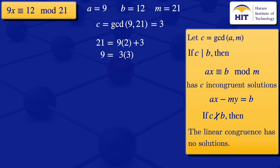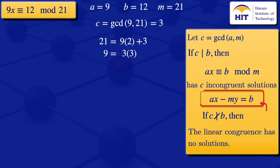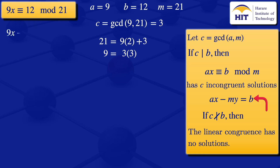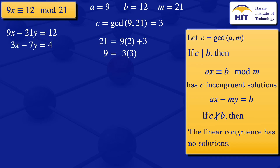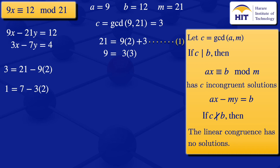To find those solutions, we solve ax − my = b: substituting gives 9x − 21y = 12. Since 3 is a common divisor of all terms, we divide throughout by 3 and obtain 3x − 7y = 4. Label this equation 1. From the Euclidean step, 3 = 21 − 9 × 2. Dividing by 3: 1 = 7 − 3 × 2.